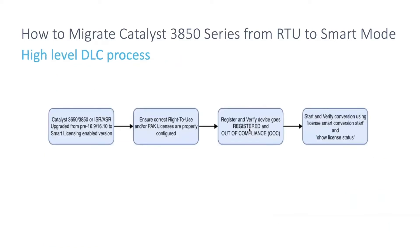In terms of the workflow, you start by upgrading your device from a legacy version like 16.8 or lower — which doesn't support smart licensing — to 16.9, which only supports smart licensing. Then you register the device on your smart account. Finally, the last step is to run the conversion CLI command from the device. That's the high-level workflow in a nutshell.